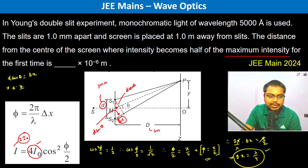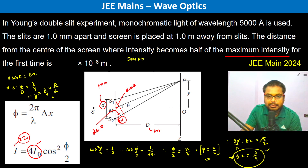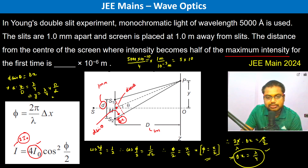So d·(y/D) = λ/4, giving y = (λ/4)·(D/d). Substituting values: λ = 5×10⁻¹⁰ m, D = 1 m, d = 10⁻³ m. This gives y = (5×10⁻¹⁰ × 1) / (4 × 10⁻³), which simplifies to 5×10⁻¹⁰ / 4×10⁻³.